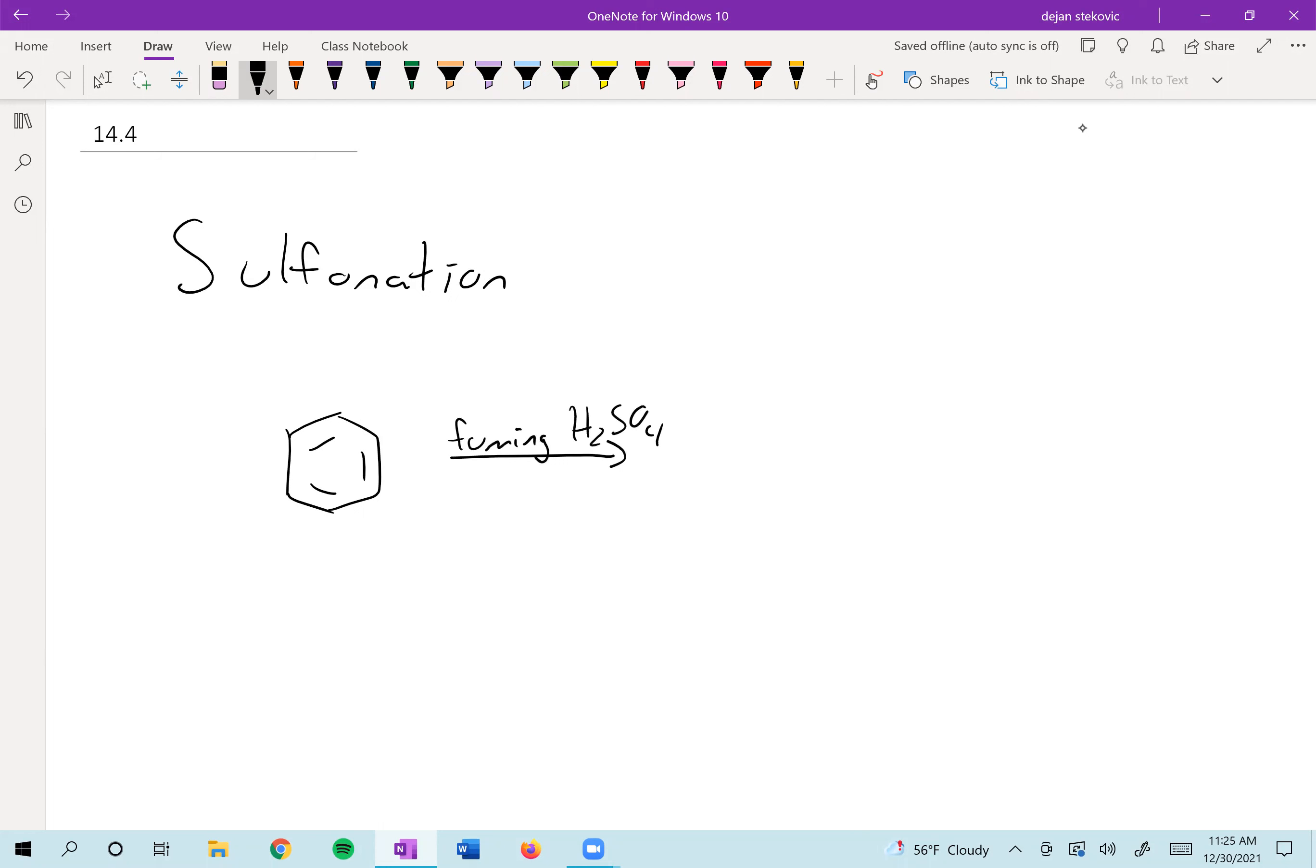You might see it being called fuming sulfuric acid, which is really just SO3 in sulfuric acid. You might see either one of these; they mean the same thing. They're both going to add a sulfonic acid group to this, which is a sulfur double bonded to two oxygens and singly bonded to an OH. Of course, you can abbreviate this to be SO3H.